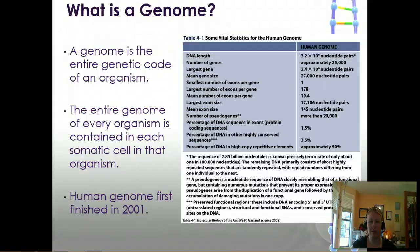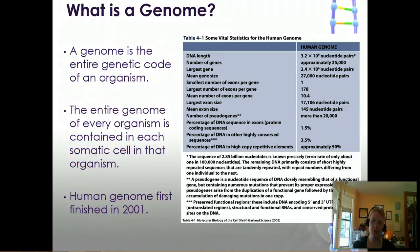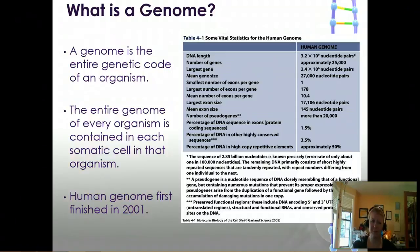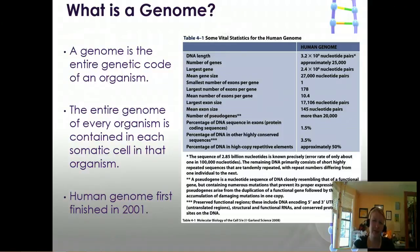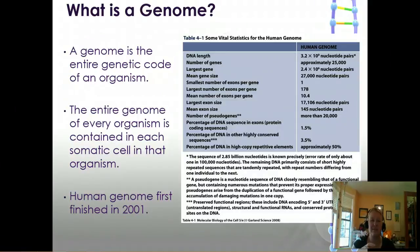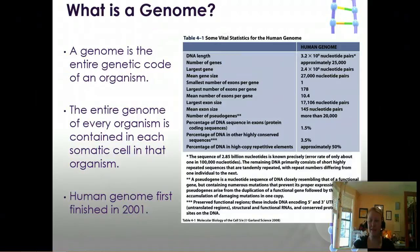Let's talk about what the genome is. The genome is the entire genetic code of an organism — I have a genome, you have a genome, dogs have a genome, and they're all slightly different, which is what makes us slightly different. This genome is contained in every somatic cell of your body, meaning every cell except your eggs or sperm, which are your gametes made in the gonads. Somatic cells contain your entire genome because eggs and sperm have only half as much.